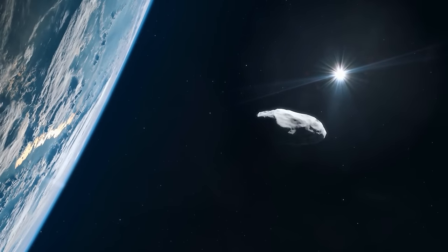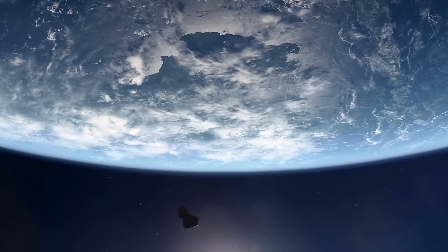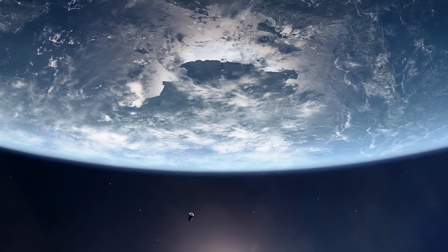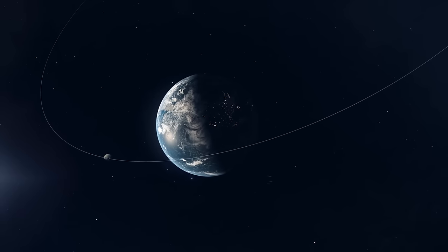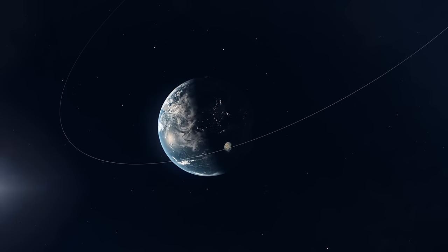In 2029, Apophis will come closer to Earth than all geostationary satellites. This means that this asteroid will fly under the satellites and miss us by a hair's breadth. But Apophis will come back. It is a near-Earth asteroid that repeatedly crosses our orbit.